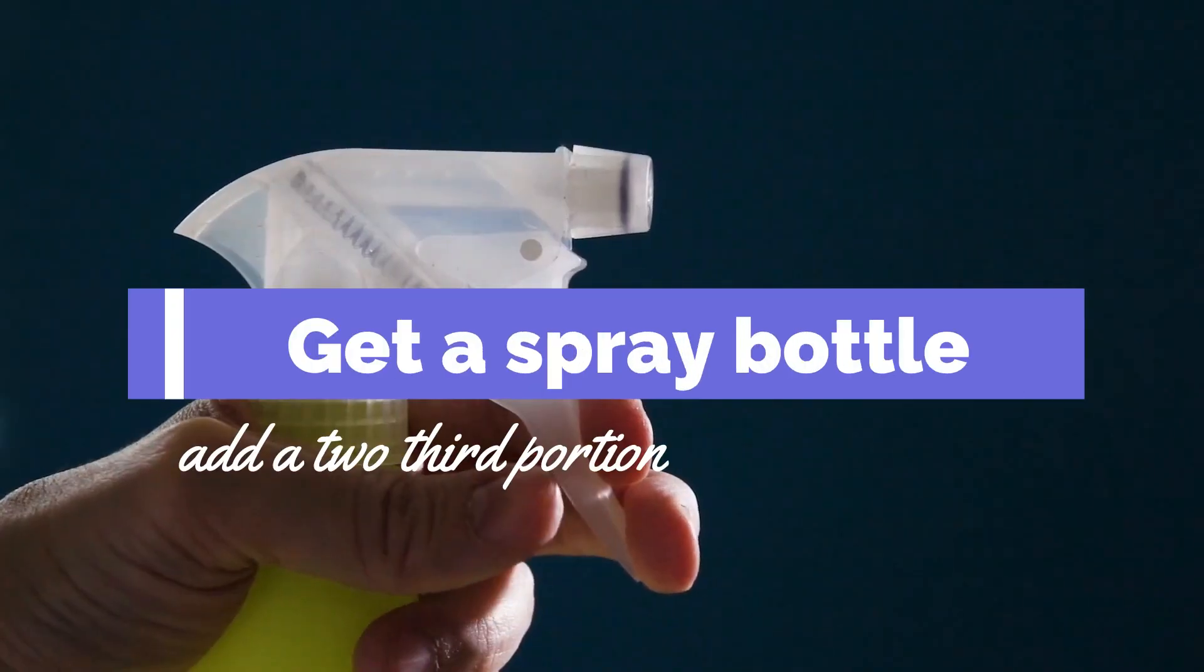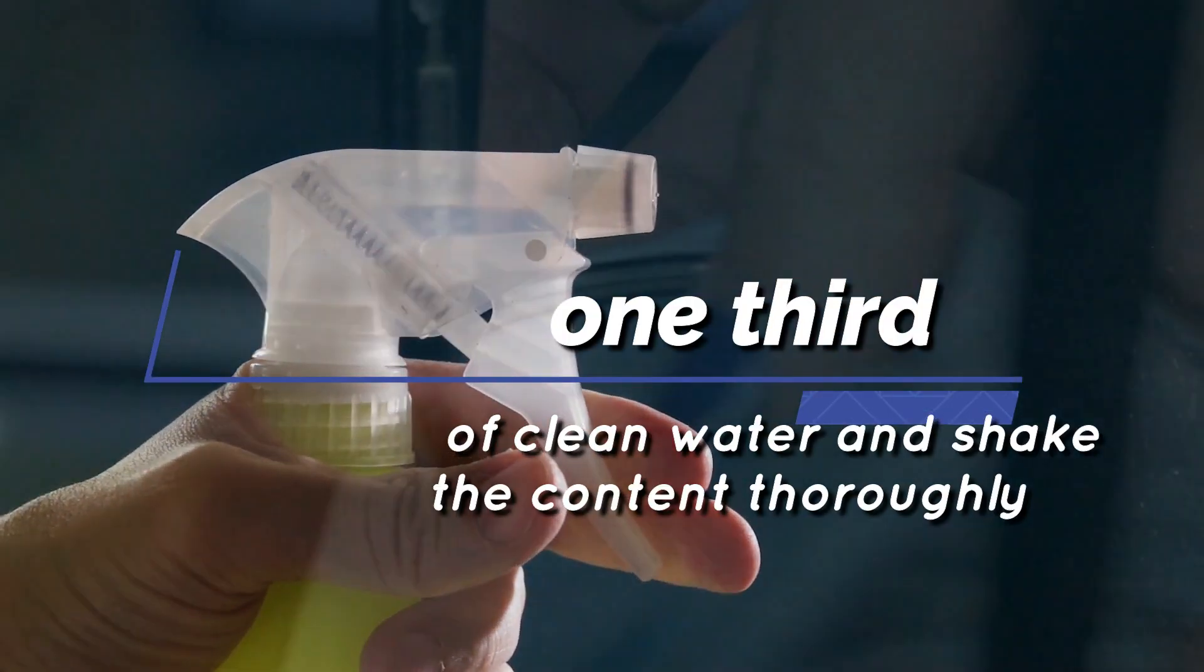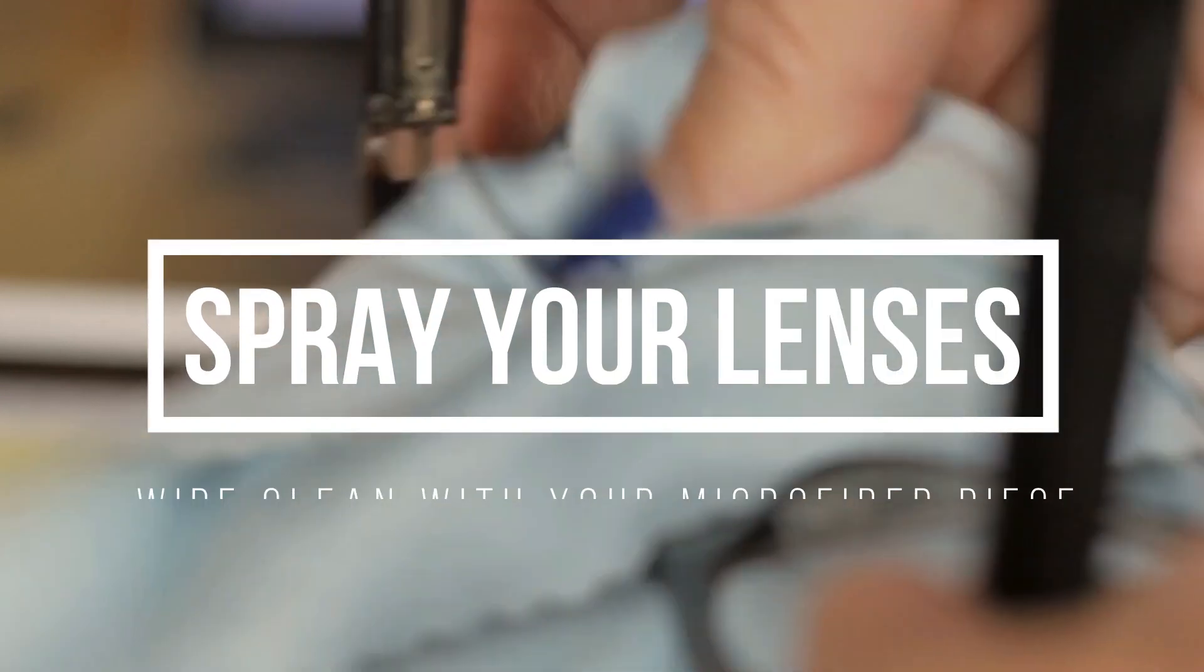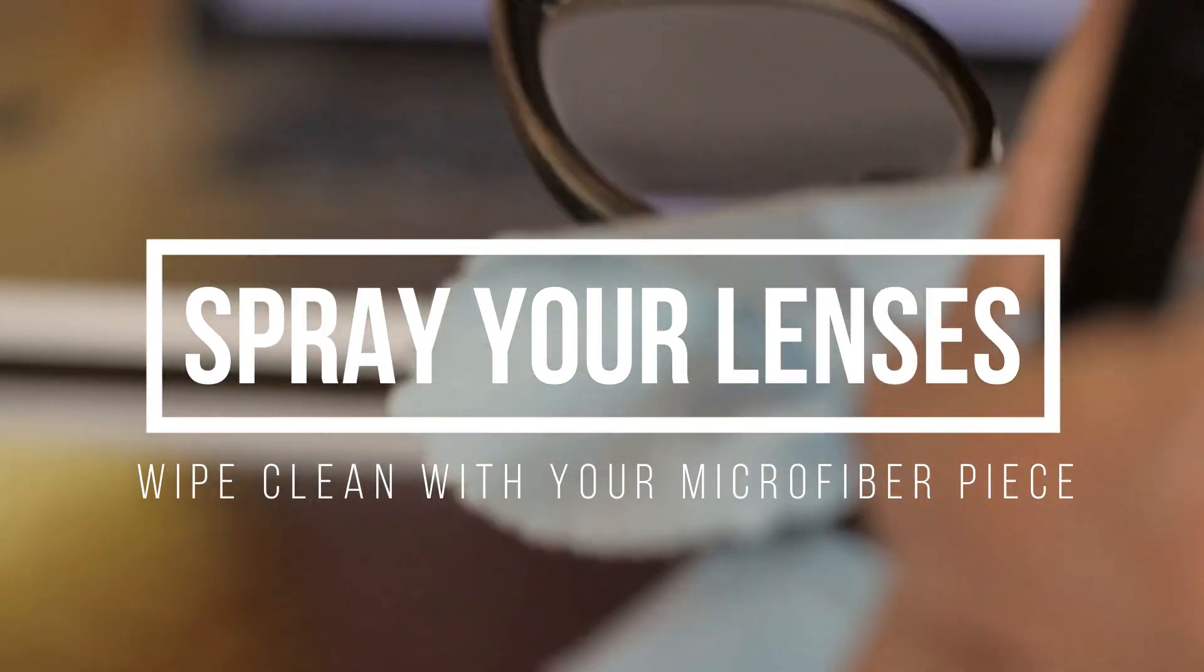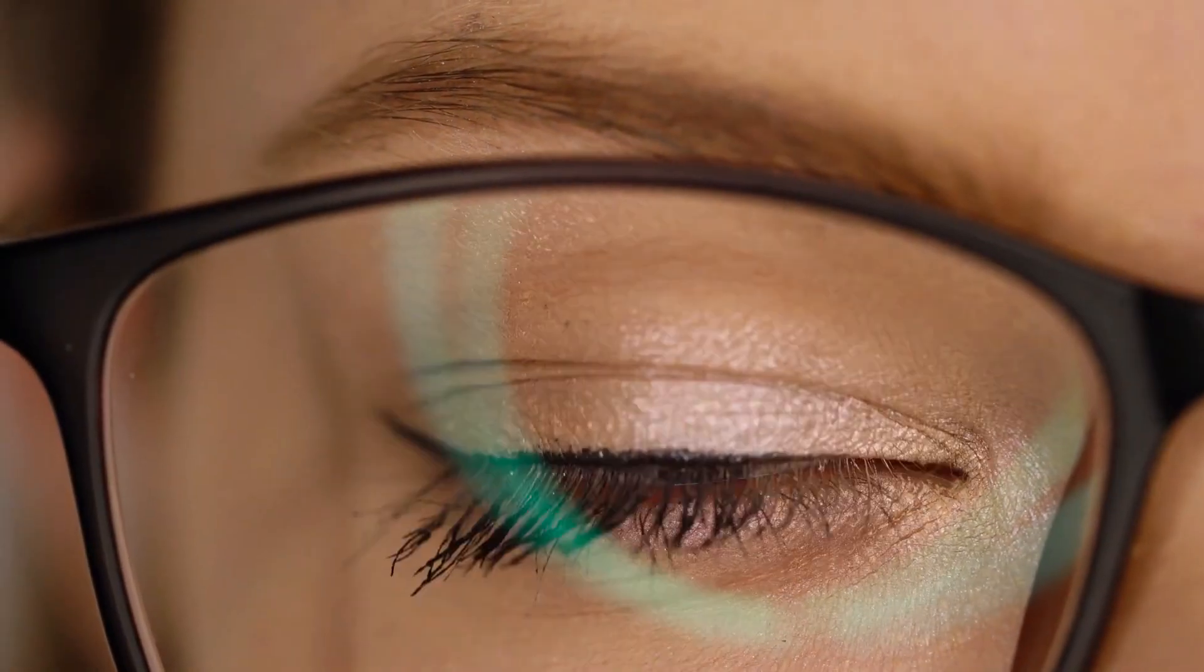Get a spray bottle, add a two-thirds portion of white vinegar then a one-third of clean water and shake the content thoroughly. Spray your lenses and wipe clean with your microfiber cloth and there you go. You can apply the solution again if necessary.